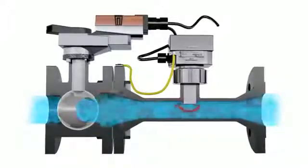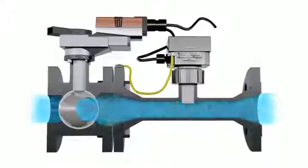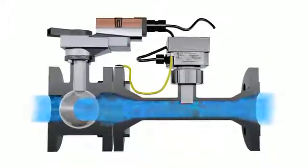The EPIV has an equal percentage flow curve. The equal percentage curve offers a more stable control for heating and cooling applications.